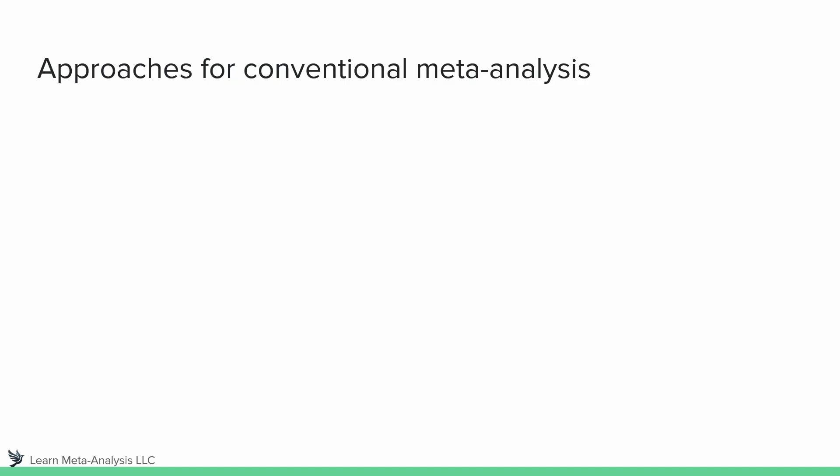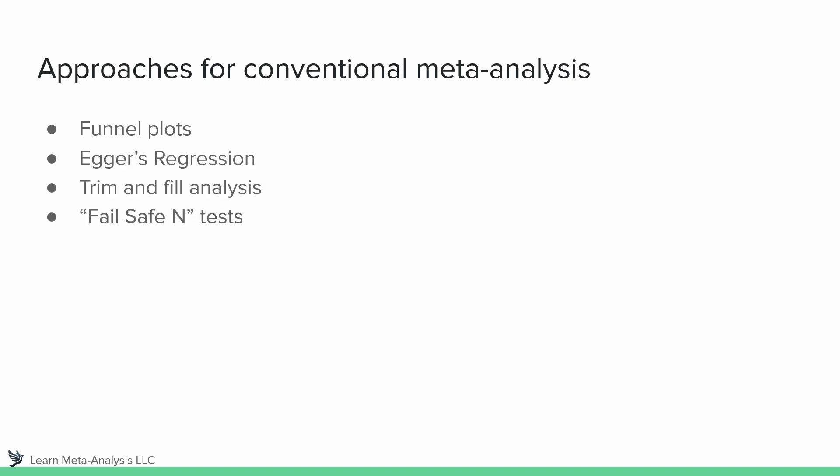So what can we do? There are a number of approaches for conventional meta-analysis, and pretty much all of them that I know about have been critiqued. But I think they all help us at least better understand the nature of our sample, which is why I think they're particularly valuable. We can look at funnel plots, use Egger's regression, use trim and fill analysis, and there are a number of fail-safe N tests that we can use.